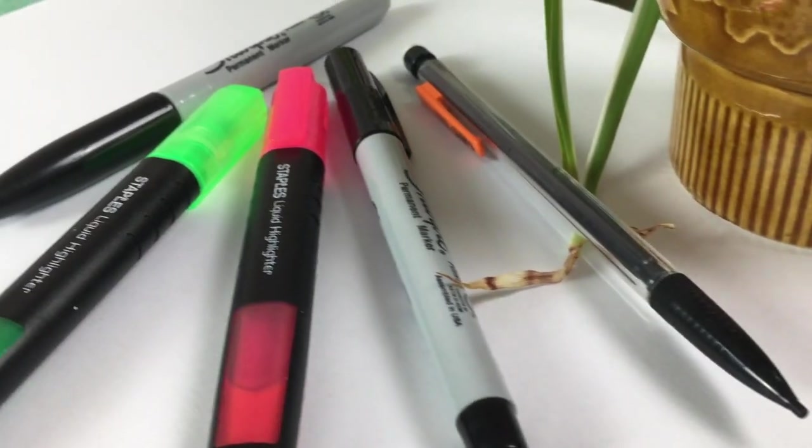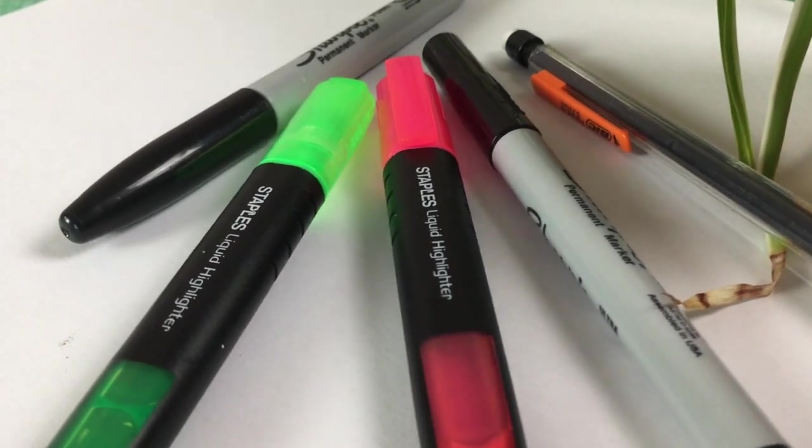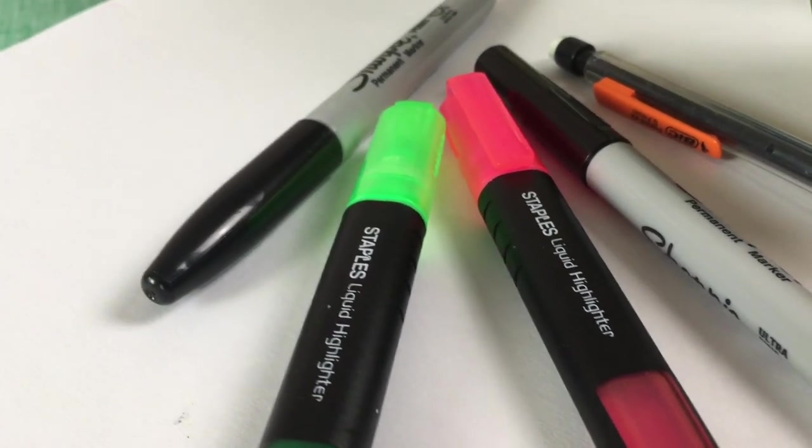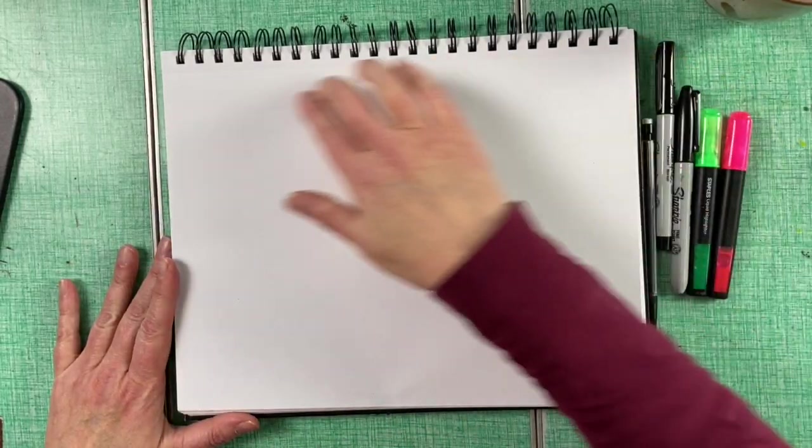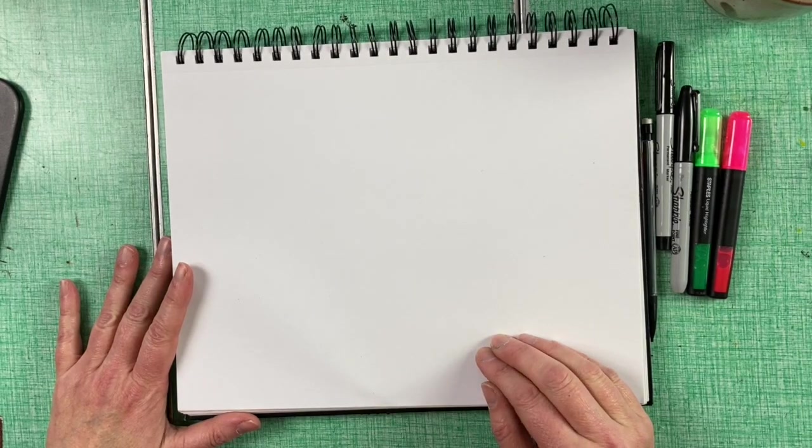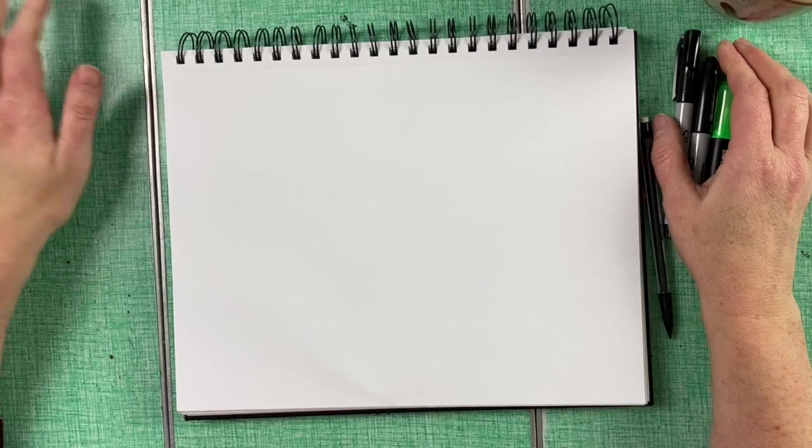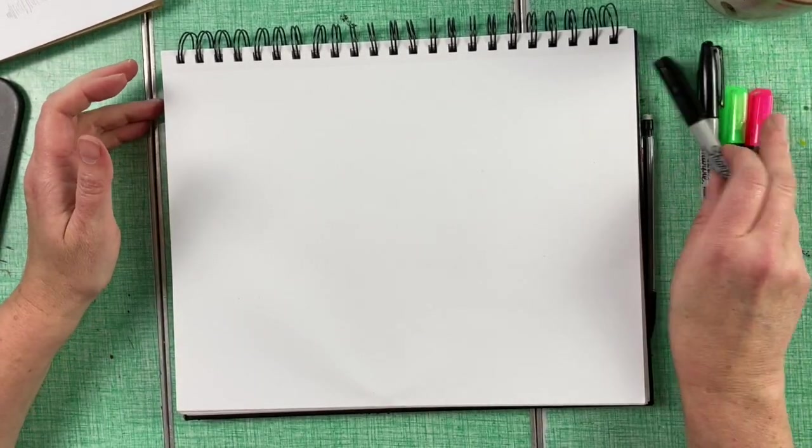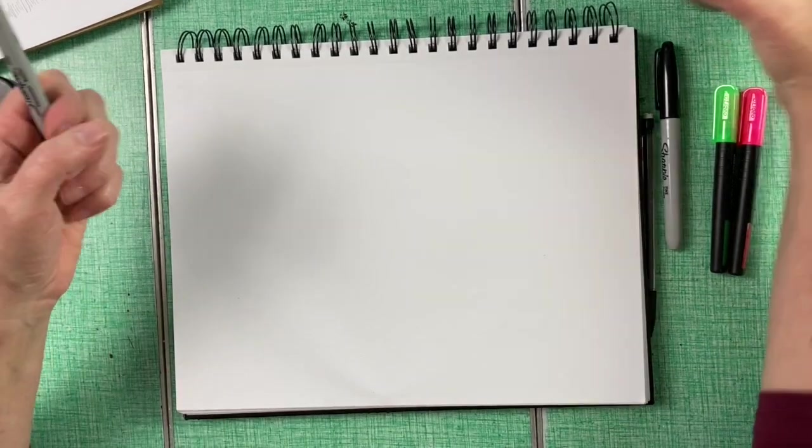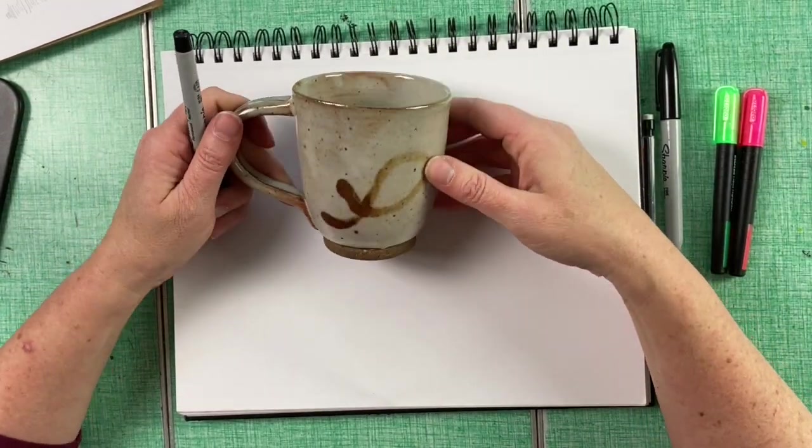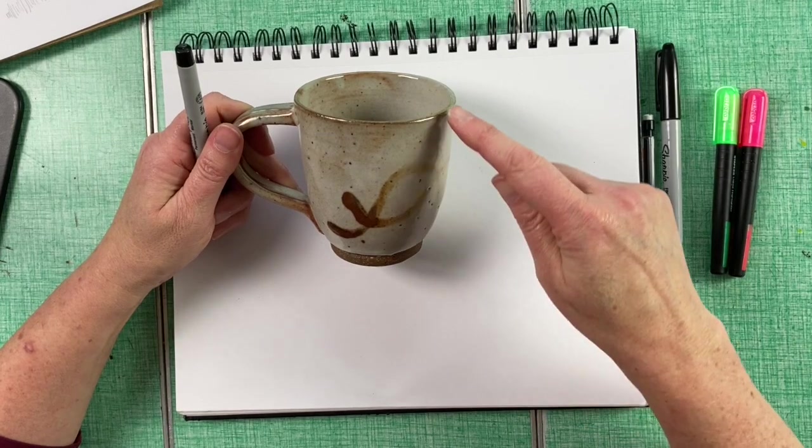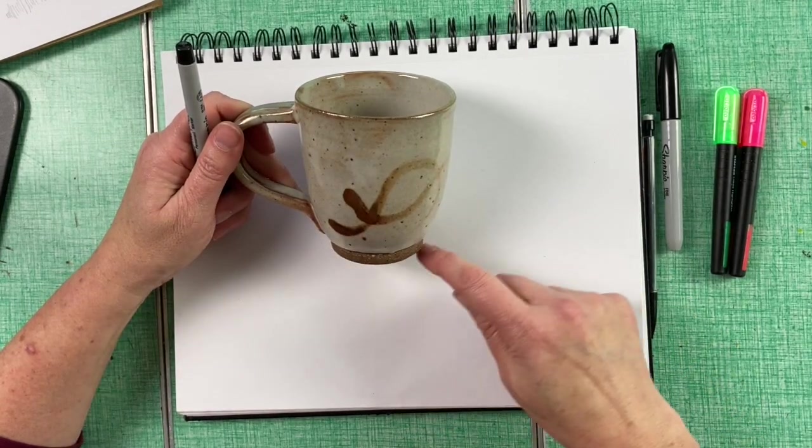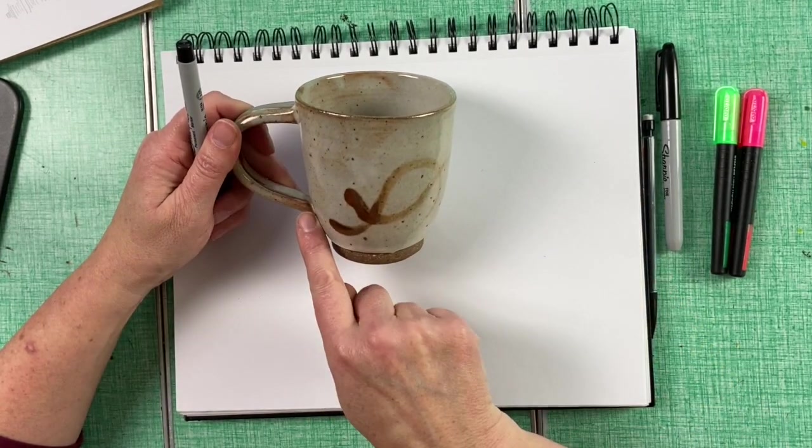Once you have gathered your supplies, we can go ahead and get started. We are going to fill this page with a bunch of different examples of line. And the first thing we're going to talk about is different things that line are used for. Line can be used to describe the edge of our subject. So for this, I'm just going to do a line that describes the outer edge of my mug.